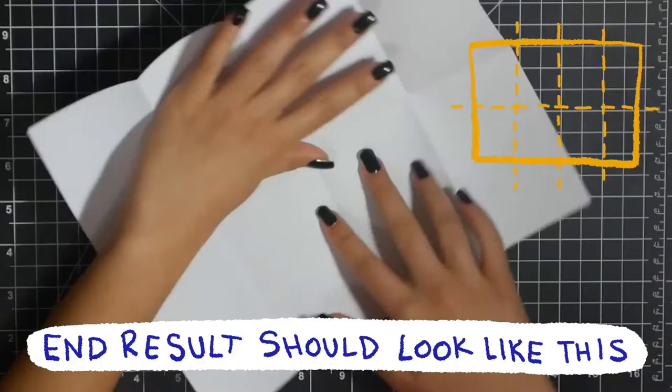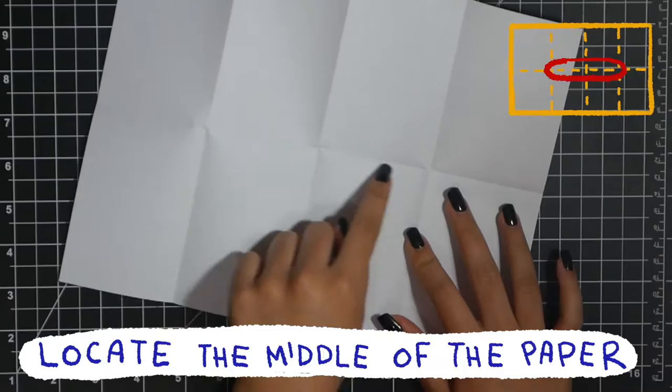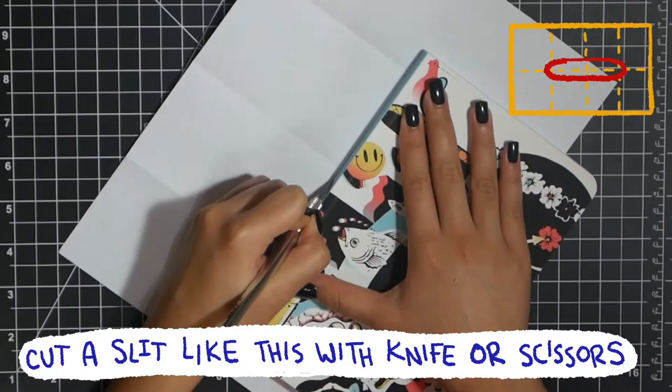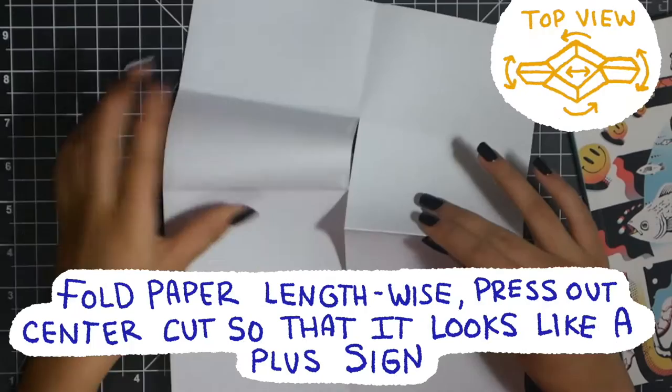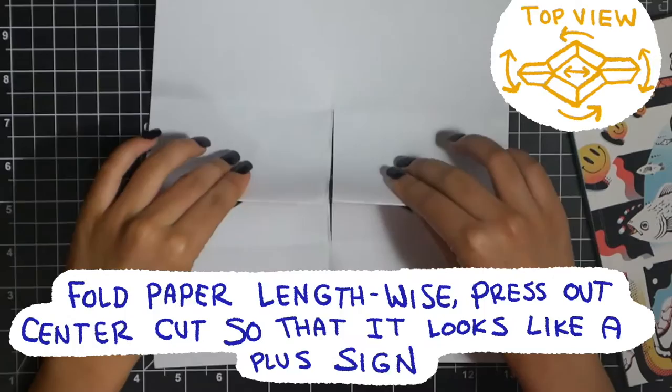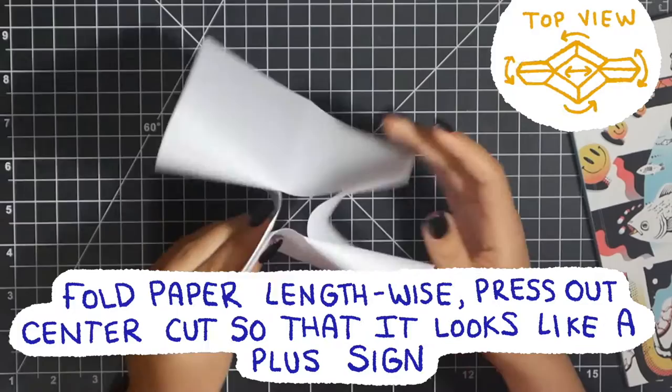Now locate the middle of the paper, and this is where you are going to cut a slit. Okay, now for this part, you're going to pinch each side, each middle page of each side opposite of the slit. And then you're going to put it together, basically just follow what I'm demonstrating in the video.